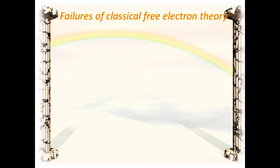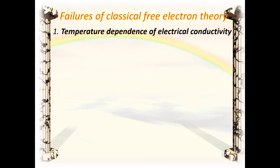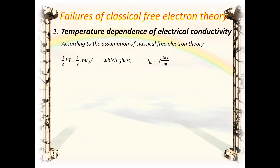Next, we consider the failures of classical free electron theory. The first failure is temperature dependence of electrical conductivity. From the classical assumption (1/2)mv_th² = (3/2)kT, we get v_th = √(3kT/m), so v_th is proportional to √T. Since the mean collision time τ is inversely proportional to v_th, we get τ ∝ 1/√T.